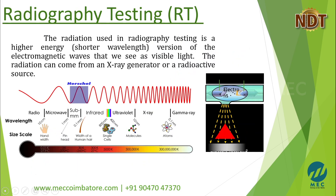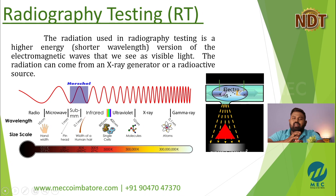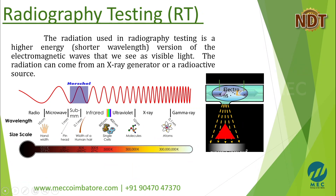Let's talk about Radiography Testing. In this method, we use X-ray. We pass the X-ray. In this industry, we use X-ray and gamma-rays. You can use Iridium and Cobalt as radioactive elements. There are also natural occurring radioactive elements: Uranium, Thorium, and Plutonium.